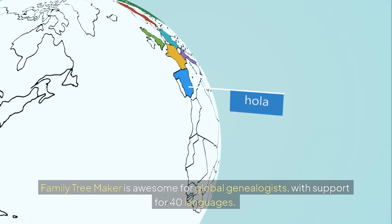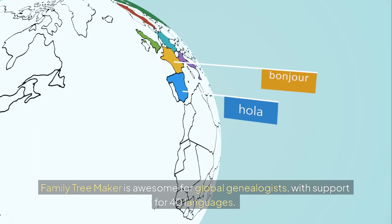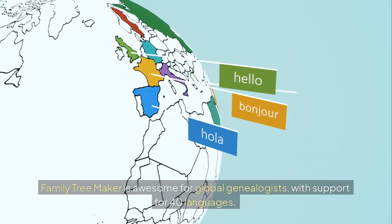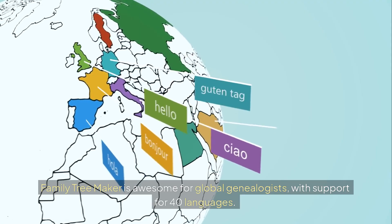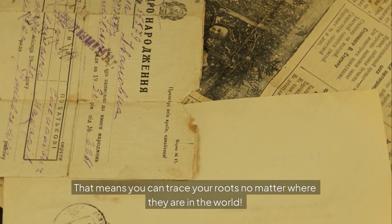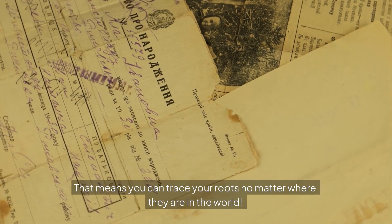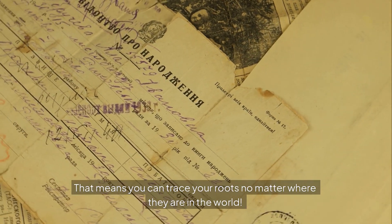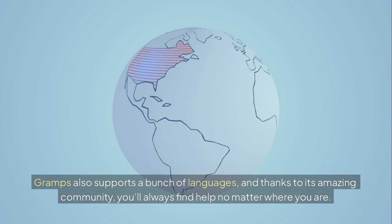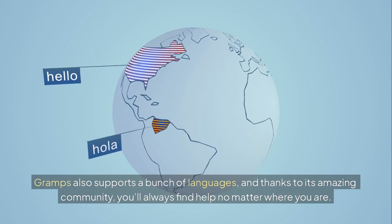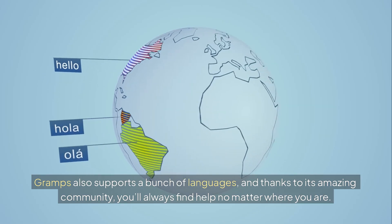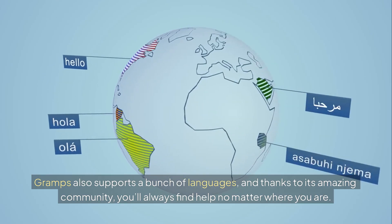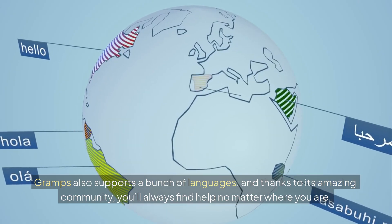Family Tree Maker is awesome for global genealogists, with support for 40 languages. That means you can trace your roots no matter where they are in the world. Gramps also supports a bunch of languages, and thanks to its amazing community, you'll always find help no matter where you are.